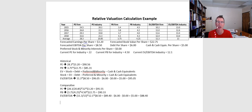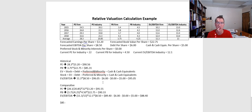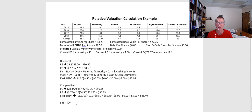So based on my calculations here, I would say that the value of this company is probably somewhere between $85 — rounding from $85.31 — and $95.55, which I'll round to $96. The value of our firm based on this relative valuation analysis is probably somewhere in the ballpark of $85 to $96. That goes through the calculations. I'm going to put together another video that will walk through some of the complications we have to think about when applying this in real-world settings. Thank you.